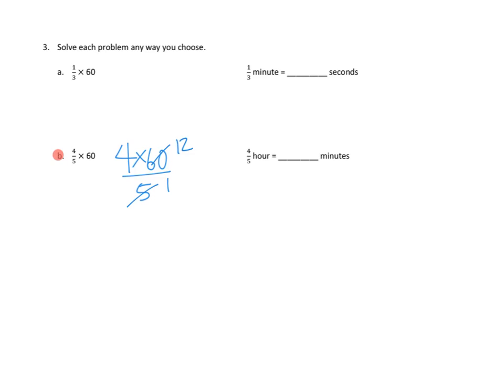So now I have a simpler problem. 4 times 12. That's 48. All over 1. So no denominator. And I think I have my answer. 4 fifths of an hour. 4 fifths of an hour is the same as 48 minutes. Awesome.